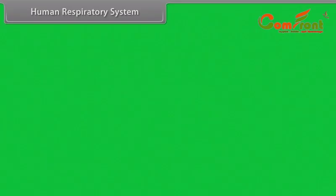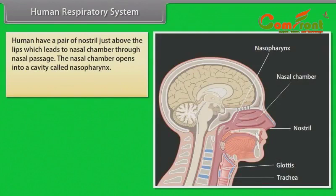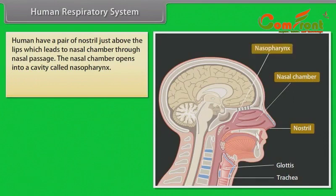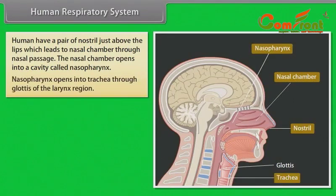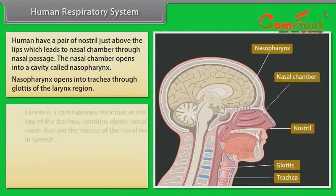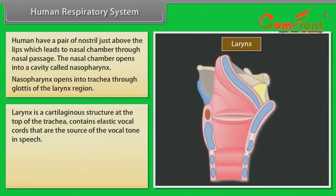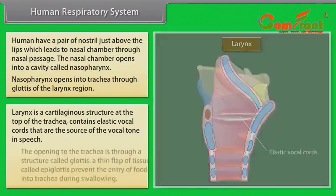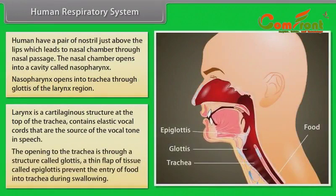Human respiratory system: Humans have a pair of nostrils just above the lips, which leads to the nasal chamber through the nasal passage. The nasal chamber opens into a cavity called the nasopharynx. The nasopharynx opens into the trachea through the glottis of the larynx region. The larynx is a cartilaginous structure at the top of the trachea, containing elastic vocal cords that are the source of vocal tone in speech. The opening to the trachea is through a structure called the glottis. A thin flap of tissue called the epiglottis prevents the entry of food into the trachea.